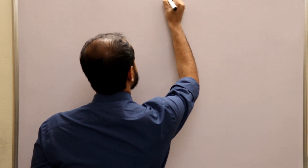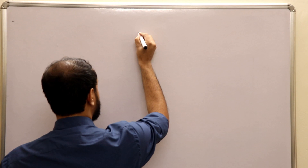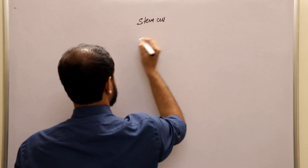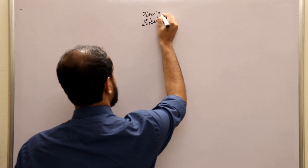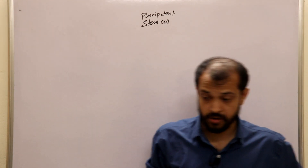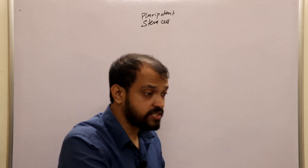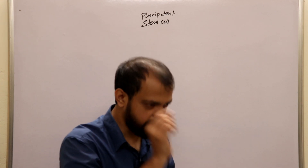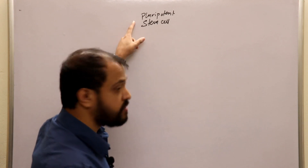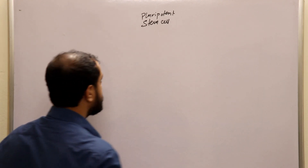We will start with a stem cell called the pluripotent stem cell. Do you know what is meant by pluripotent and totipotent? We will be discussing the difference between pluripotent stem cell and totipotent stem cell — we will talk more about this in stem cell biology.